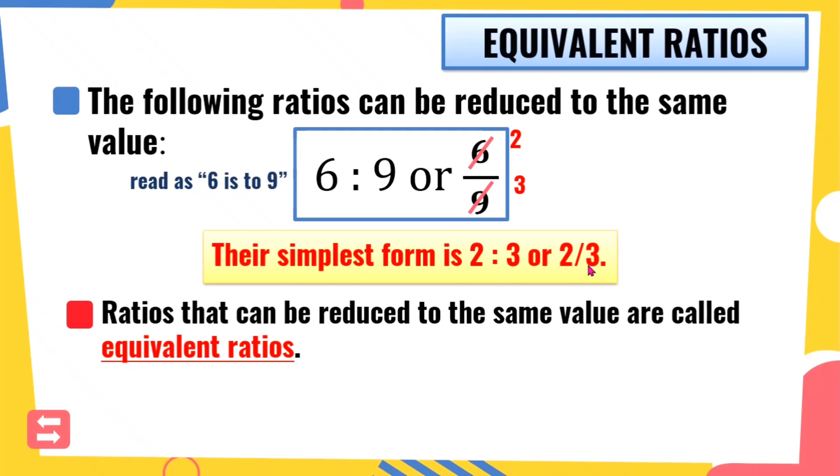Therefore, the simplest form is 2 is to 3 or 2 thirds. Ganon natin pwedeng i-simplify yung ating mga ratios. Isipin lang natin siya or i-treat lang natin siya as fraction. Kung paano tayo naglo-lowest term sa fraction, ganon ang gagawin natin dito. And ratios that can be reduced to the same value are called equivalent ratios. So ito na ngayon, equivalent ratios means proportion. We can say that 6 is to 9 as 2 is to 3. So equal sila, dahil nakita naman natin na ang simplest form ng 6 over 9 is 2 thirds. At try natin ipag-multiply yung kanilang mga means and extremes. Unahin natin yung means. So 9 times 2 is 18. And yung extreme, yung nasa dalawang dulo na number, 6 times 3 is 18. Makikita natin na equal yung product ng means and extremes. So therefore, this is equivalent ratios or proportion.